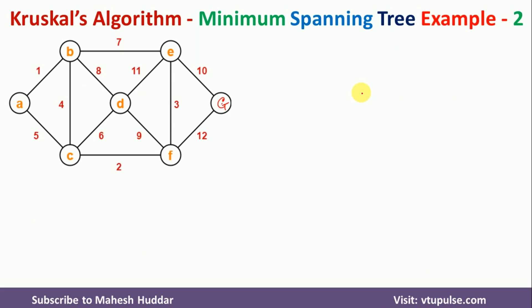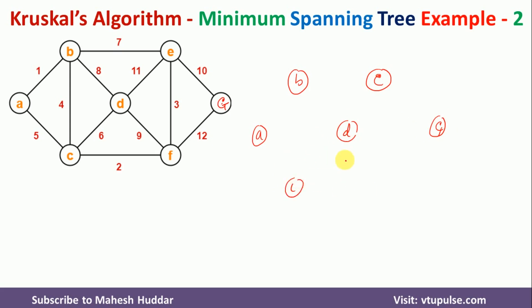In Kruskal algorithm, the very first thing we do is note down all the nodes. So I will note down all the nodes: node A, node B, node E, node G, node D, node C, and finally node F. Once I note down all these nodes, I have to draw the edges such that the smallest weighted edge is drawn first, then the next smallest weighted edge and so on.